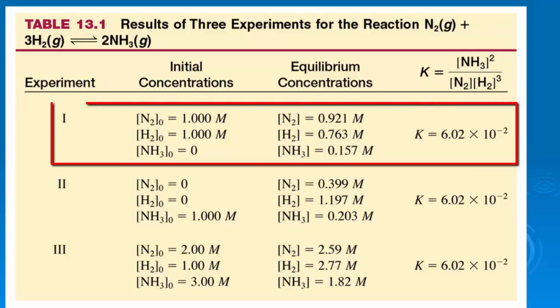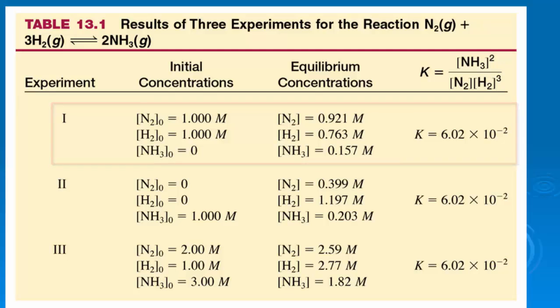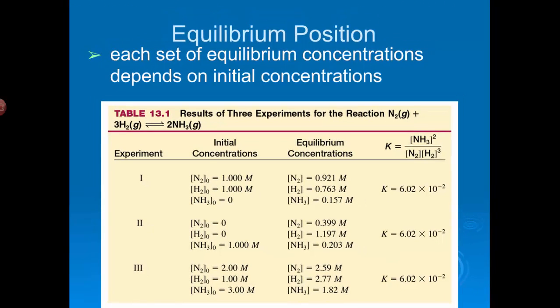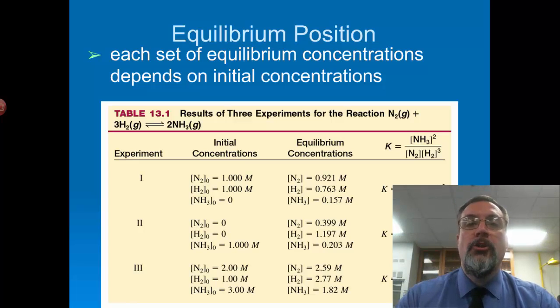In experiment one, we start with one molar concentrations of both of those. We get our concentrations at equilibrium. We have no ammonia to start with. Obviously, at equilibrium we have those. We do our K expression, we come up with a value of 6.02 times 10 to the minus 2. It doesn't matter what I do to my reaction. Look in the second experiment. We started with no reactants. We started only with products. The reverse reaction occurs. At equilibrium, we have new concentrations that we can measure, and the ratio is always going to be the same, as long as I don't mess with the temperature. Each of the equilibrium concentrations in each of these experiments depends on what I started with, but the ratio is the same.